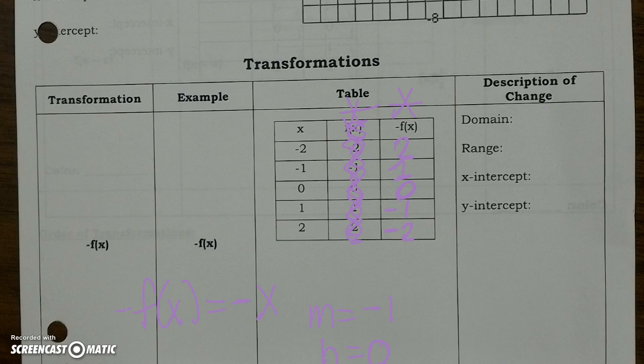Now let's look at our domain. The graph is a continuous function going along x and y. So our domain is negative infinity is less than or equal to x, which is less than or equal to positive infinity. The range is the same: negative infinity is less than or equal to y, which is less than or equal to positive infinity. The x-intercept is still at (0, 0) and the y-intercept is still at (0, 0).